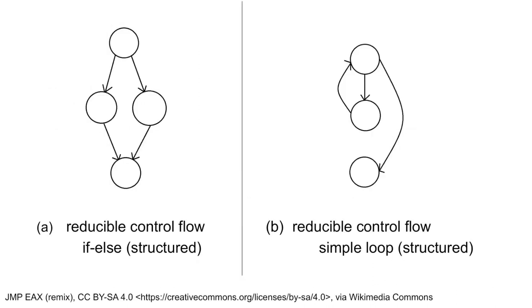To make this a little more concrete, let's look at some examples. I've put two control flow graphs on the slide — both reducible. Graph A corresponds to a simple if-else statement, and graph B corresponds to a simple loop including an exit node. Both of these are simple examples of reducible control flow.